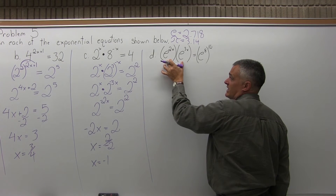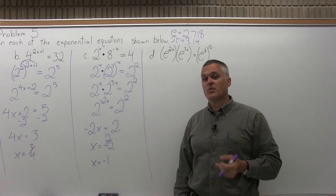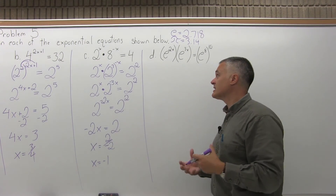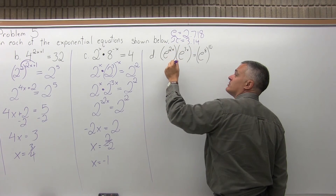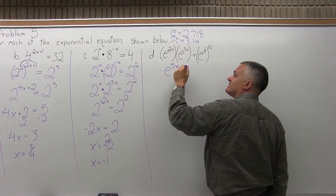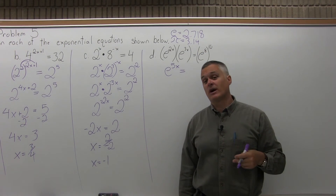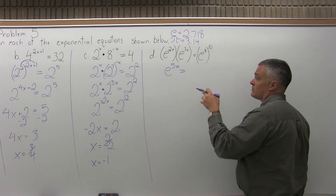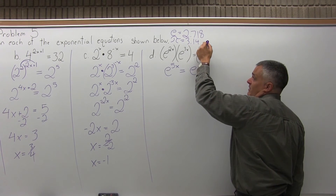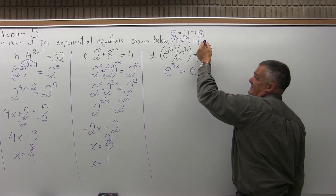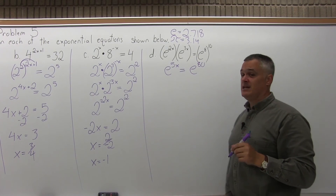On the left side, e to the 2x times e to the 3x — I'm multiplying two things with the same base, so by the rules for exponents I can add the exponents: 2x plus 3x, which gives e to the 5x. On the right side, e to the eighth power raised to the tenth power is a power to a power — multiply the exponents: 8 times 10 is 80. So I have e to the 5x equals e to the 80.